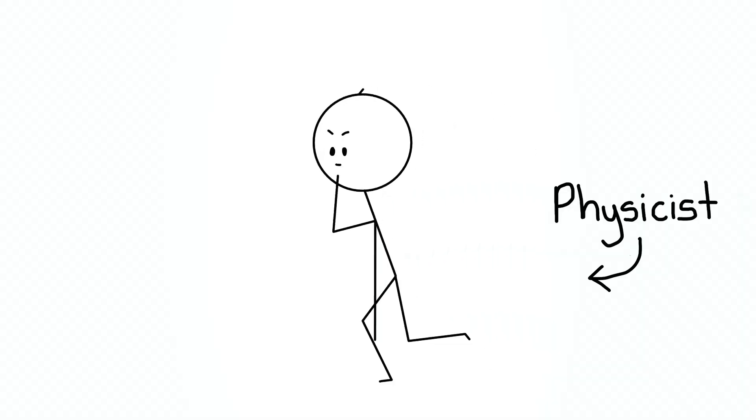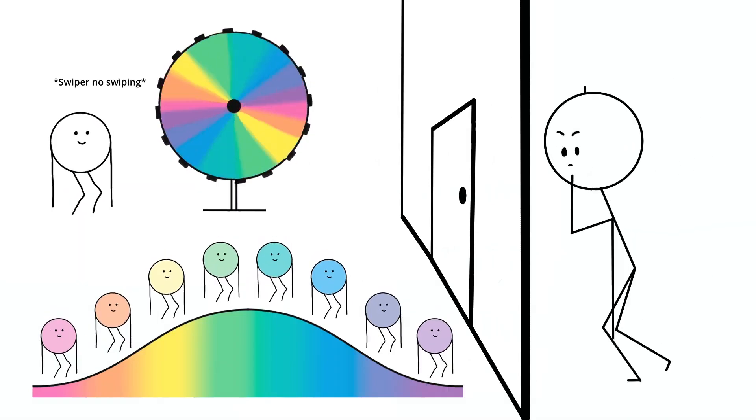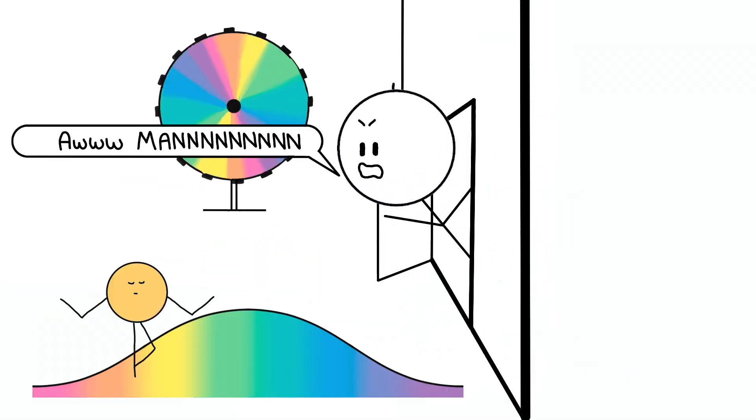The only thing that can help the wheel is if someone looks at the electron. This is called measurement and forces the electron into a definite position. Oh man!